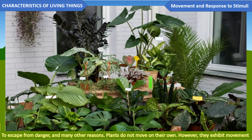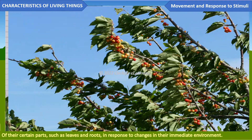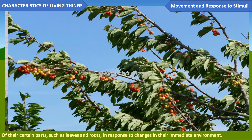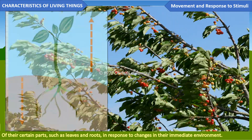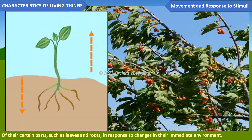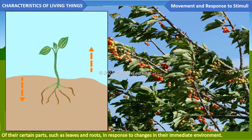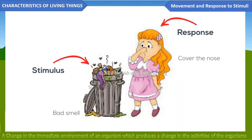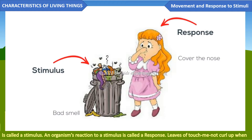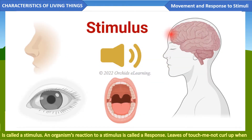Plants do not move on their own; however, they exhibit movement of certain parts such as leaves and roots in response to changes in their immediate environment. A change in the immediate environment of an organism that produces a change in the activities of the organism is called a stimulus. An organism's reaction to a stimulus is called a response.